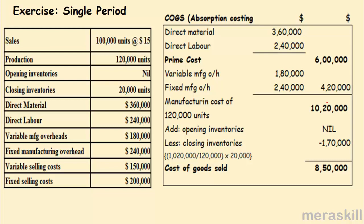Absorption costing — let us start. Direct material, direct labor — what you get is called prime cost: 360, 240. Then you will take the manufacturing overheads, whether they are fixed or variable: 180, 240. Therefore you get the manufacturing cost of 120,000 units, that is 1,020,000.